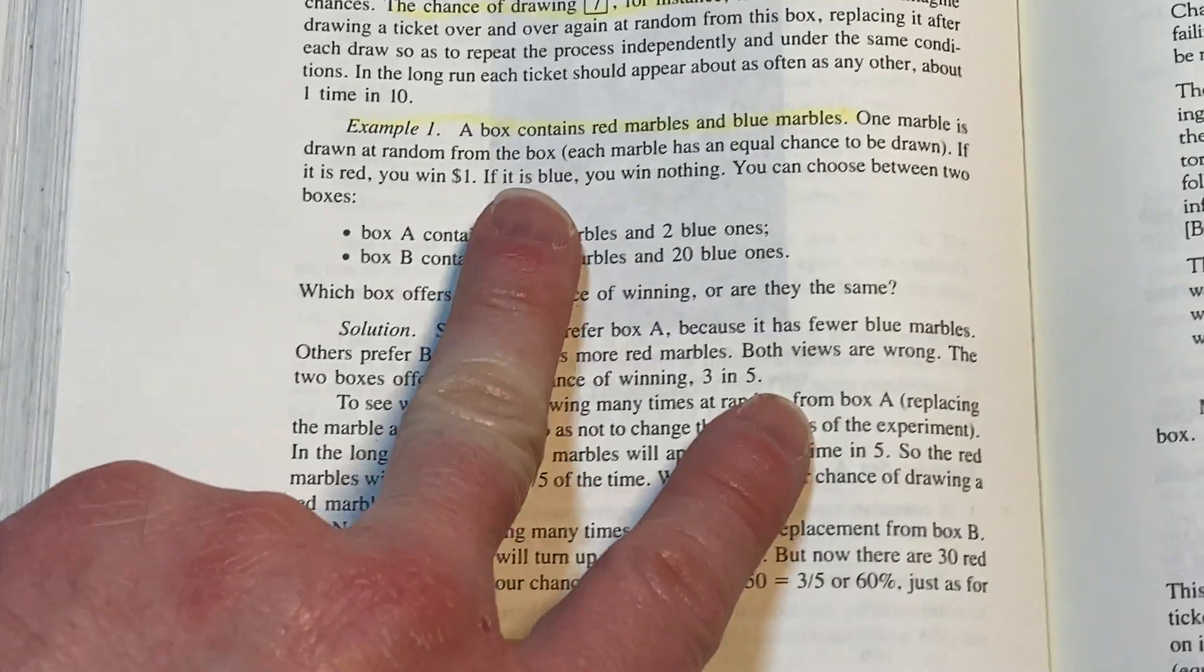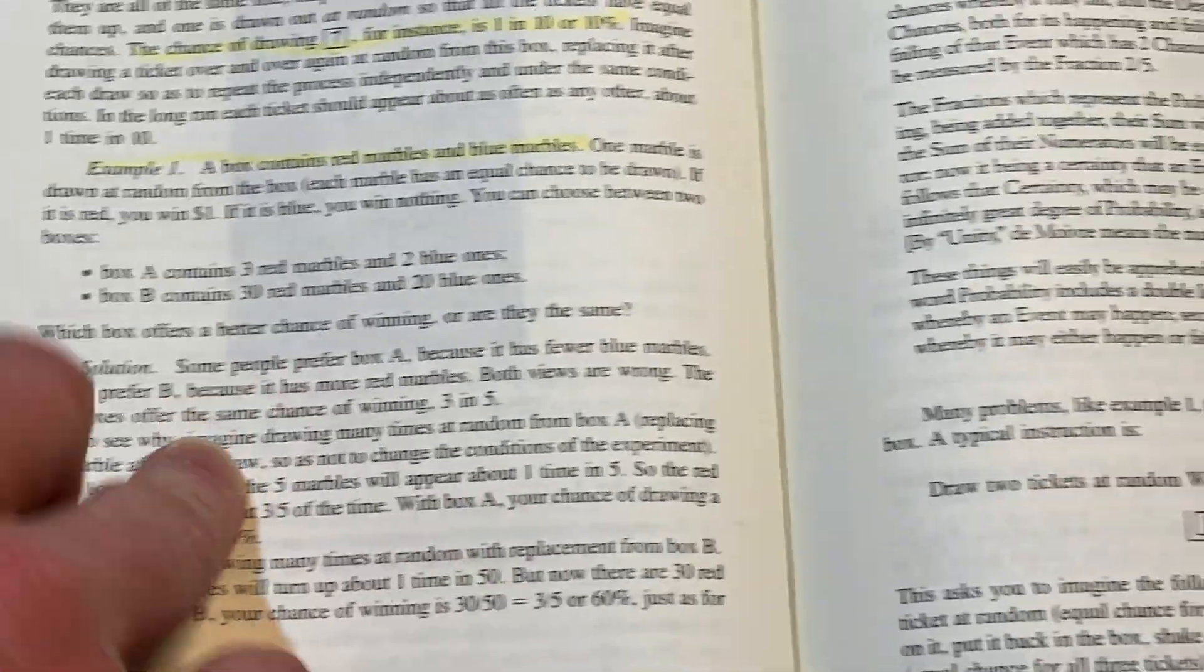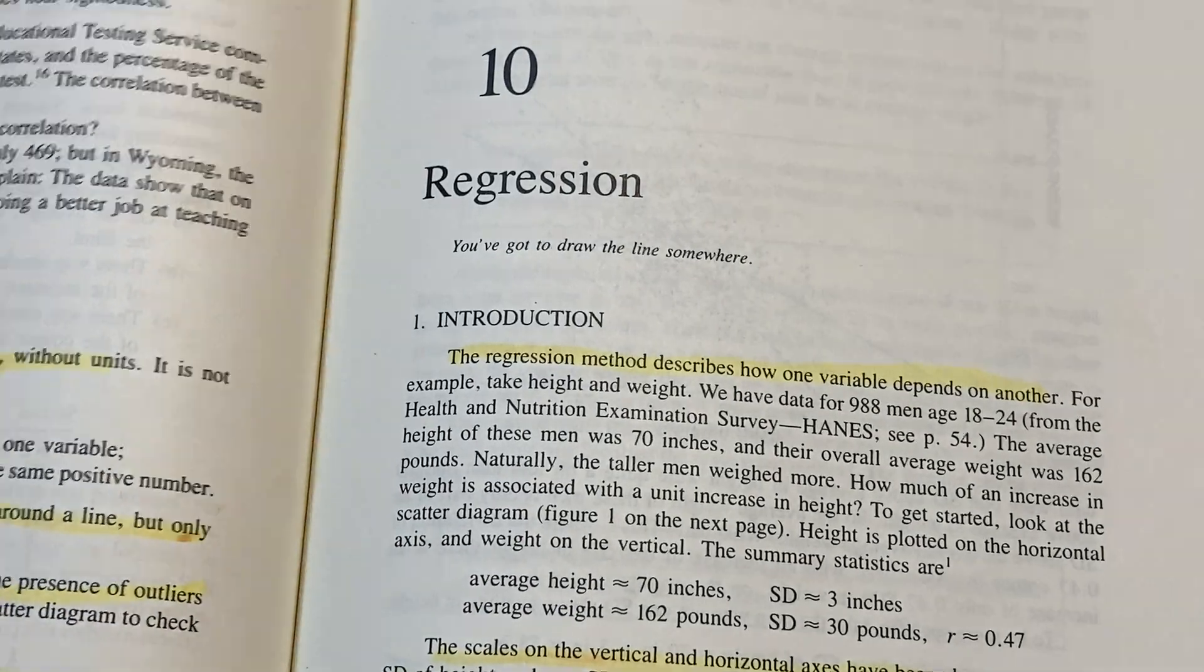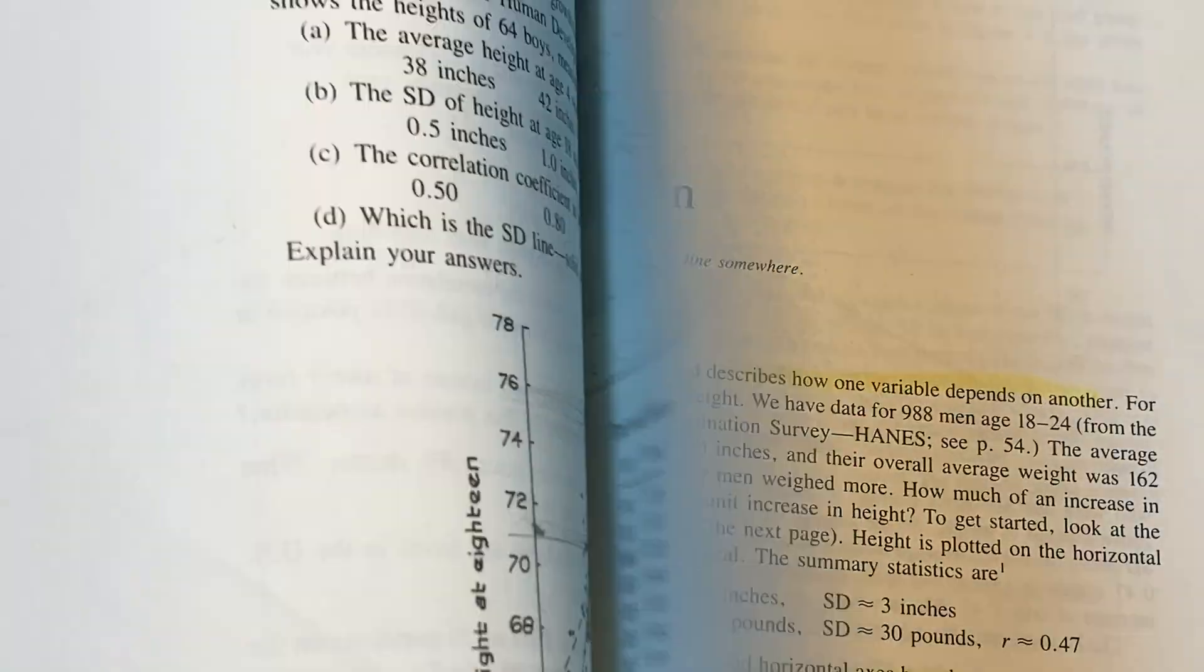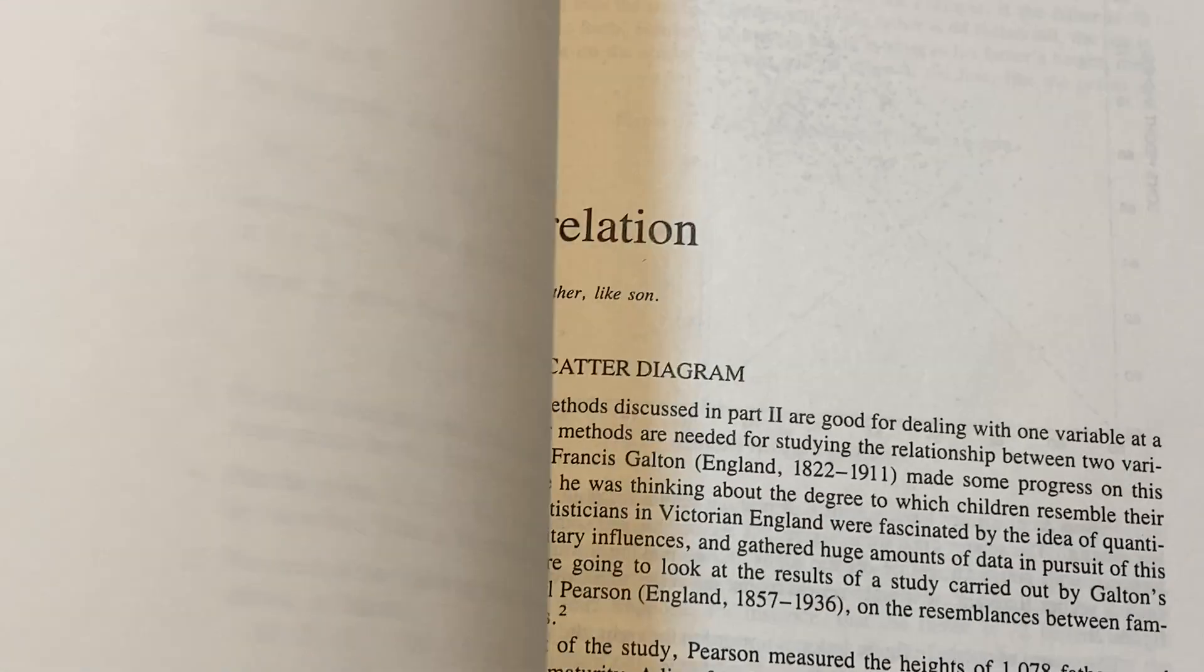And this long-run thinking here is really nice because it kind of justifies the probability in some sense. So a box contains red marbles and blue marbles. There's another example there. So interesting book. And again, those answers in the back, I think, make it really wonderful.